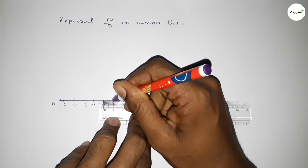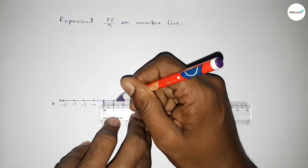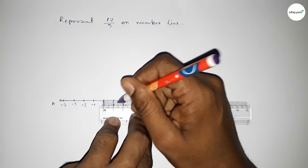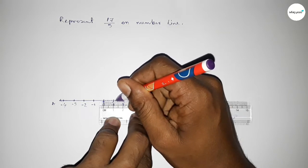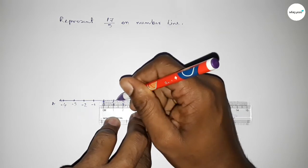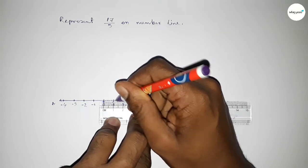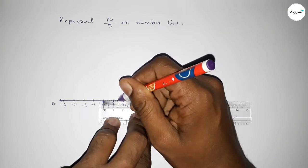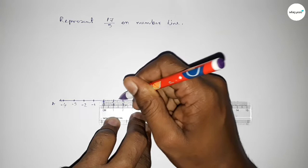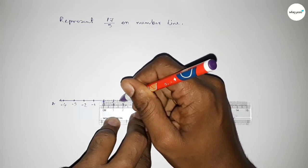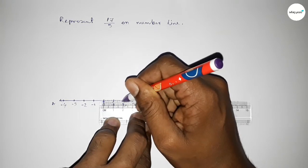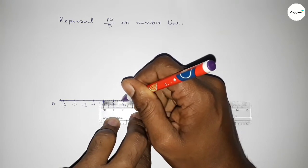Similarly, dividing the distance between 1 to 2: the first is 0.2, the second is 0.4, the third is 0.6, and the fourth is 0.8.